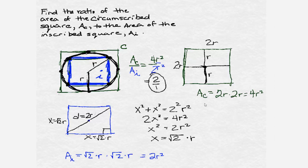Then it would turn out that the area of the inscribed square is two r squared, the area of the circumscribed square is four r squared, and the ratio will still be four r squared over two r squared, which reduces to two to one. So it doesn't really matter what size the circle happens to be.